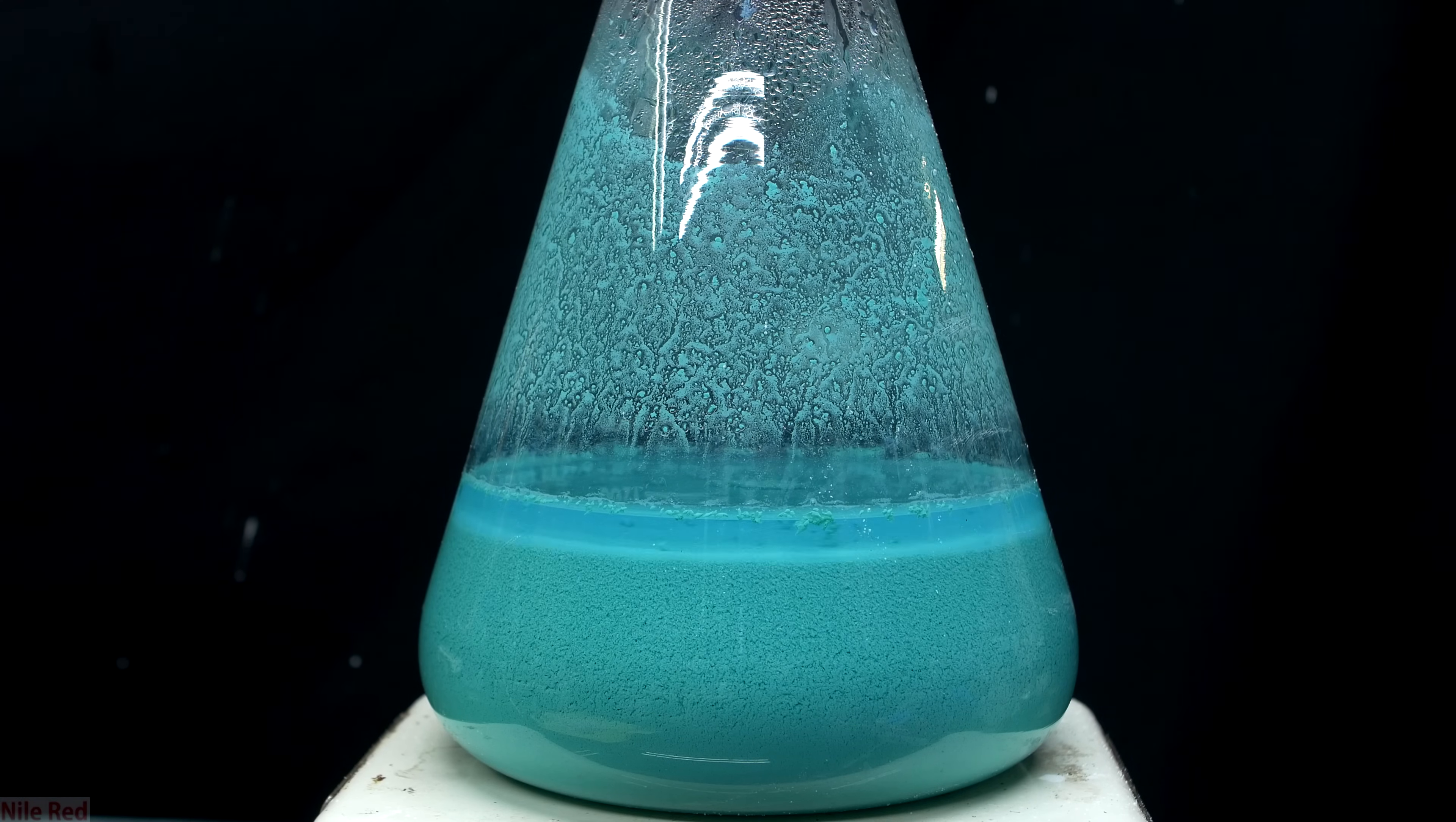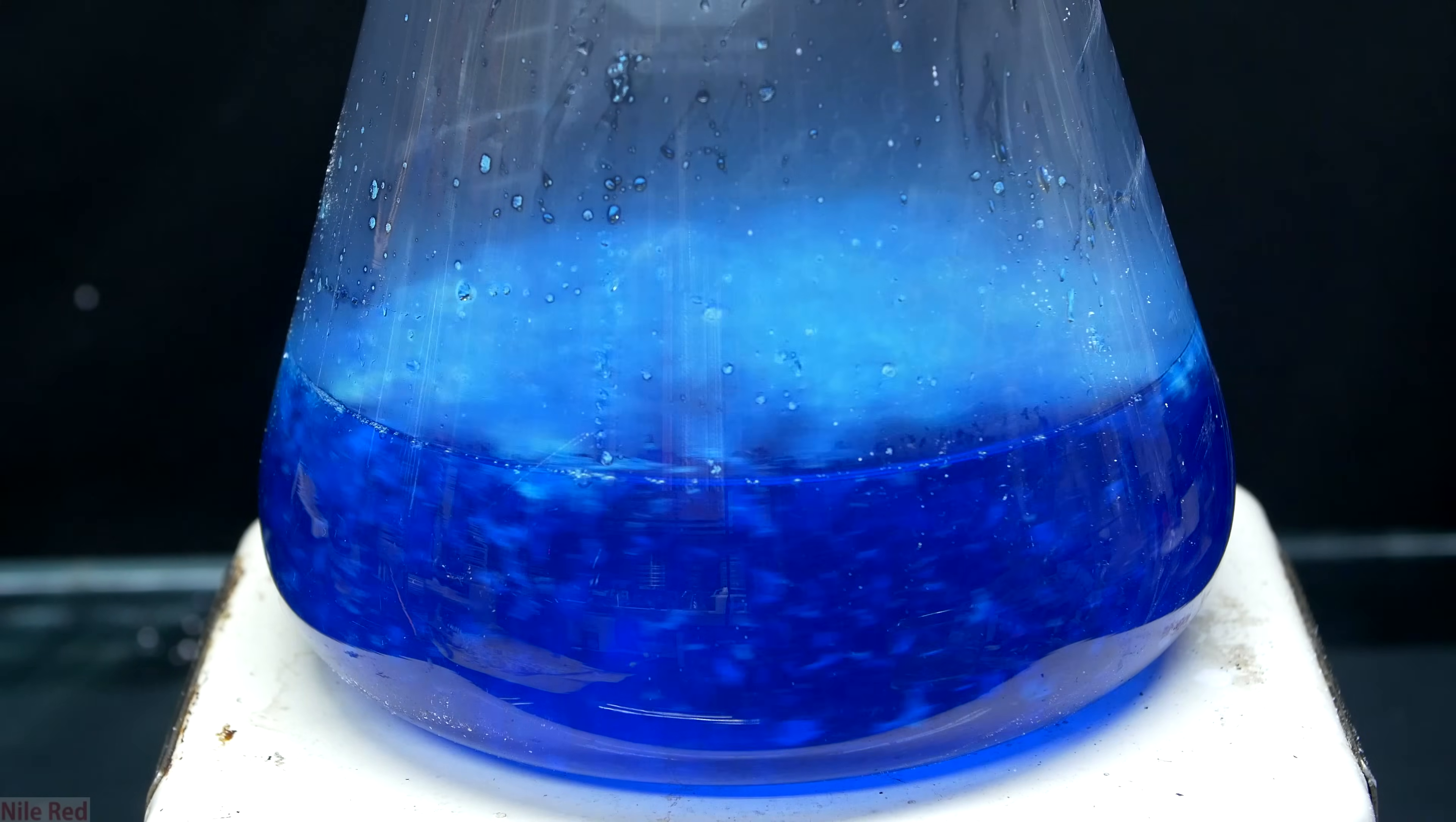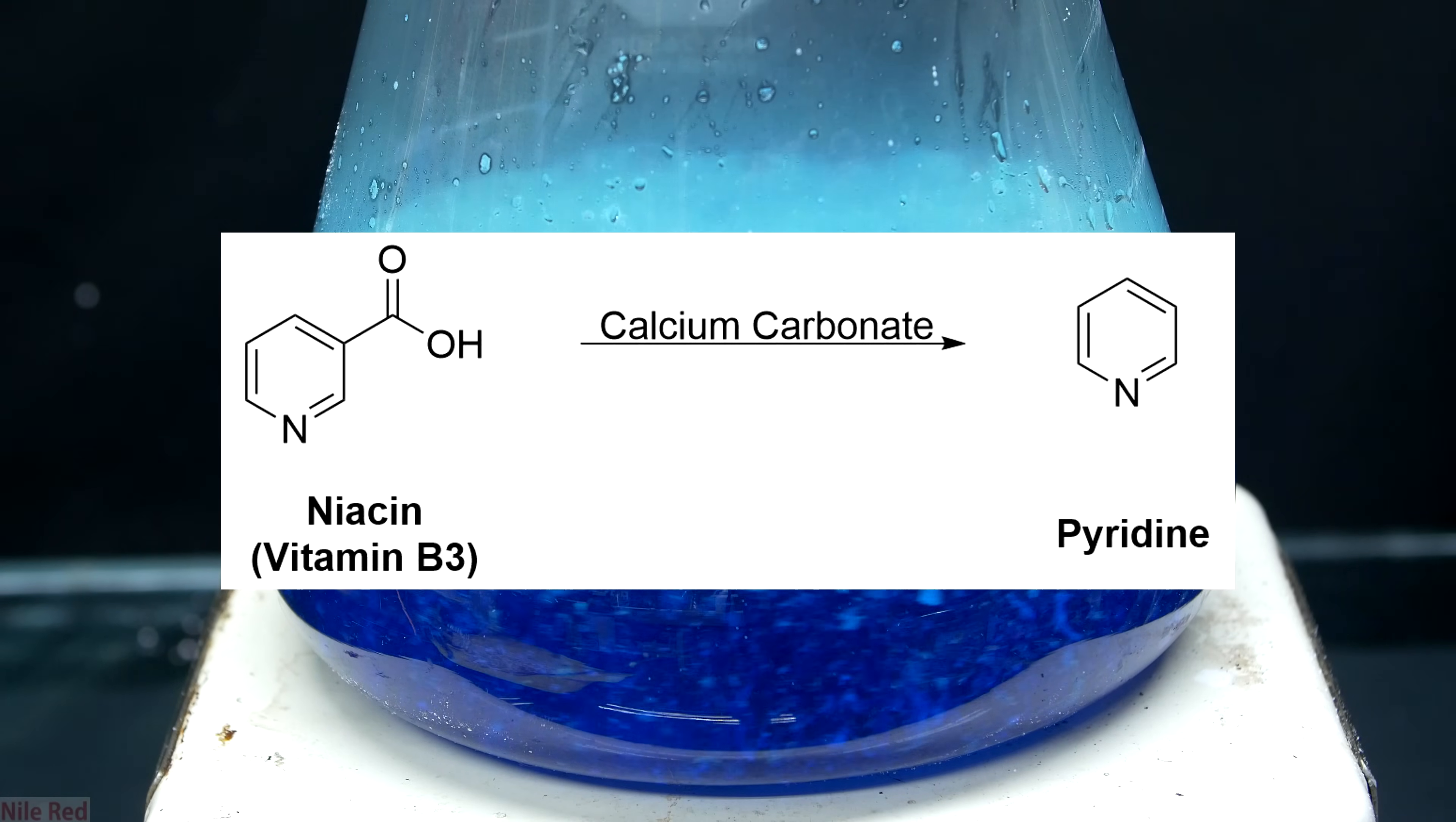Basic copper carbonate has a wide variety of uses. It can be used as a precursor to a lot of other copper salts, as a pigment or a dye, or even to control the growth and spread of aquatic weeds. For me though, I'm not going to be using it for any of these, and I'm actually going to be using it as a catalyst in a chemical reaction.